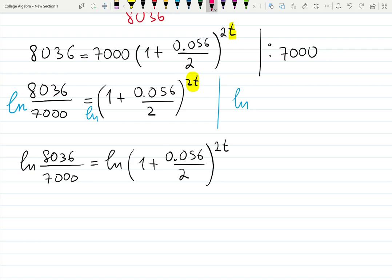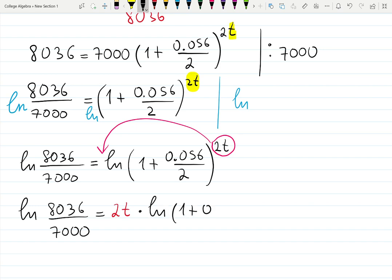ln of the parenthesis, one plus 0.056 all over 2, raised to the 2t. What does the property of the log do with this exponent? Exactly, it puts it down over here. So I will have natural log of 8036 over 7000 equals, in red color, 2t times natural log of one plus 0.056 over 2.